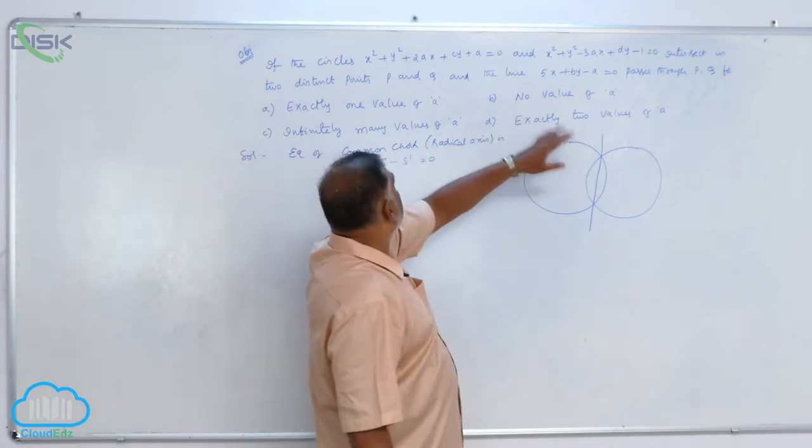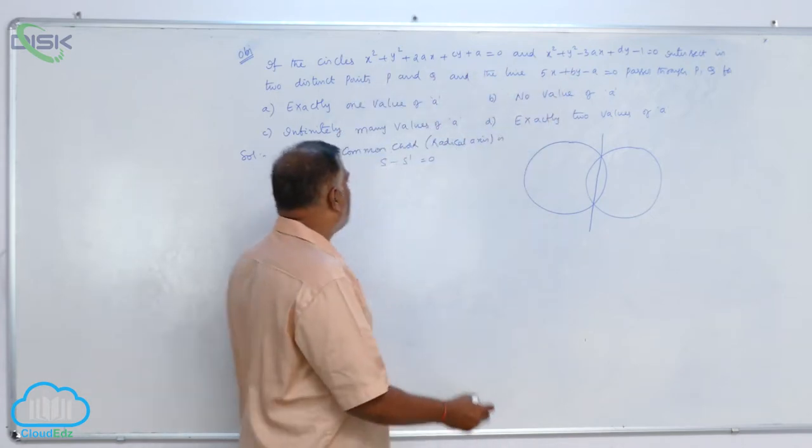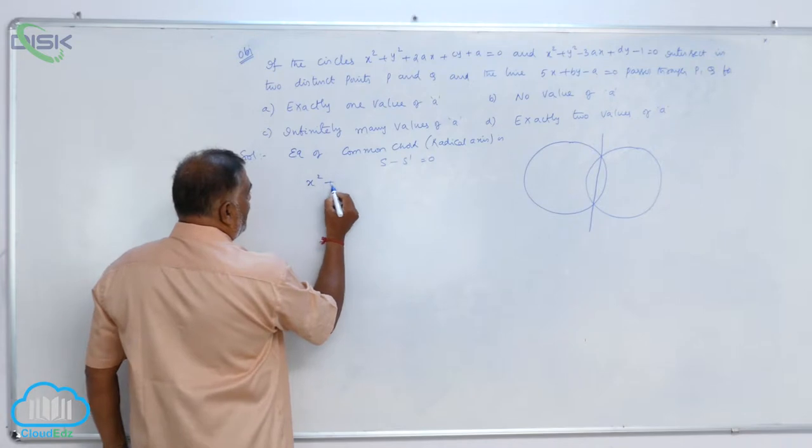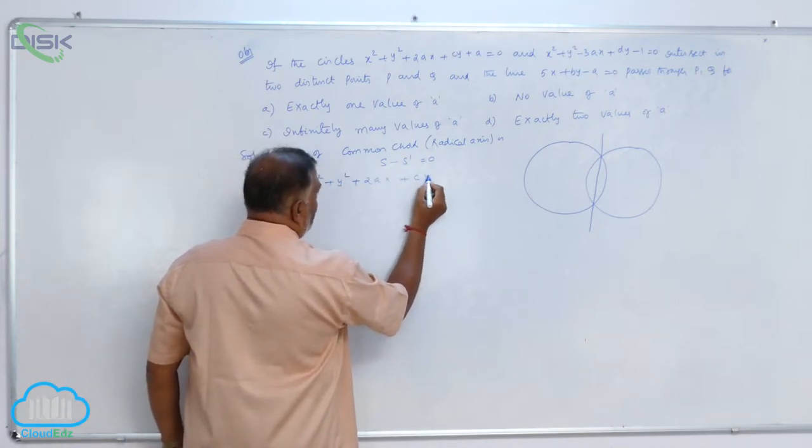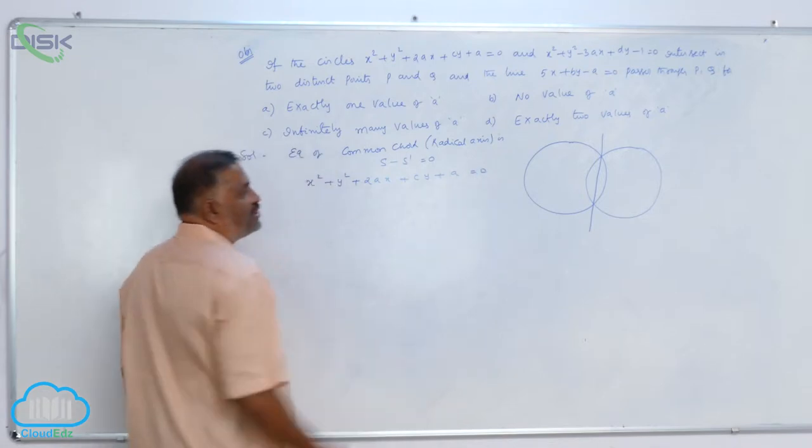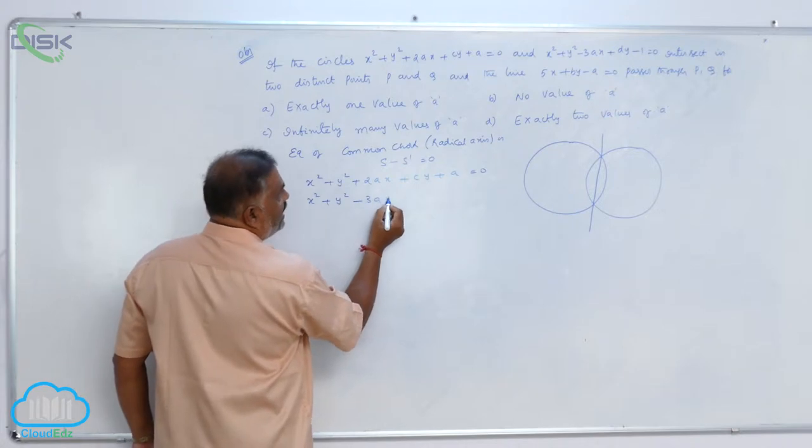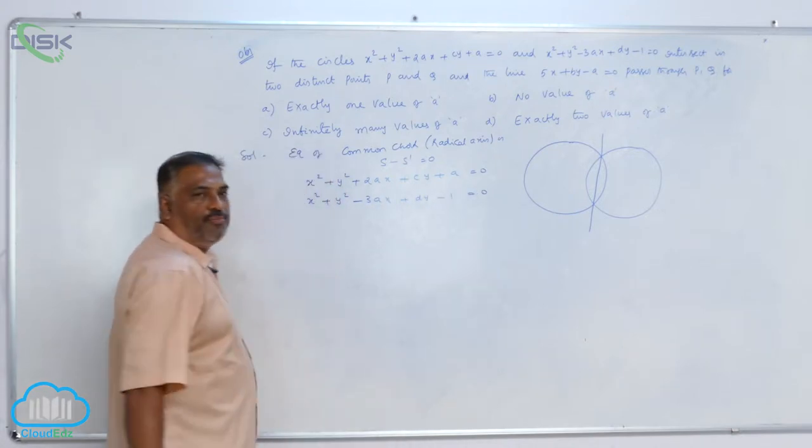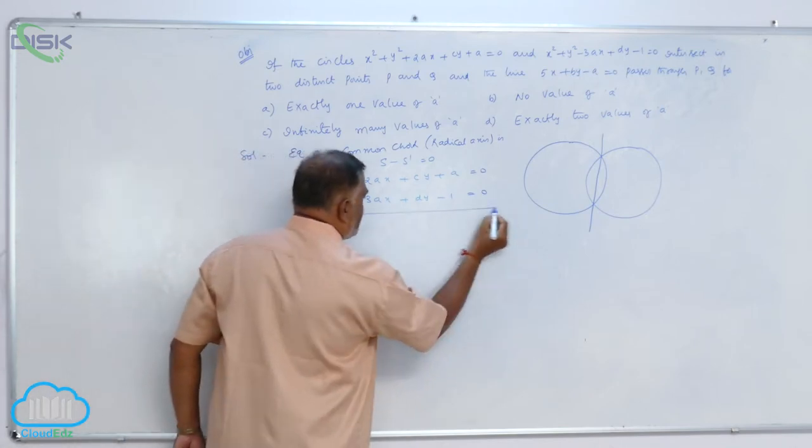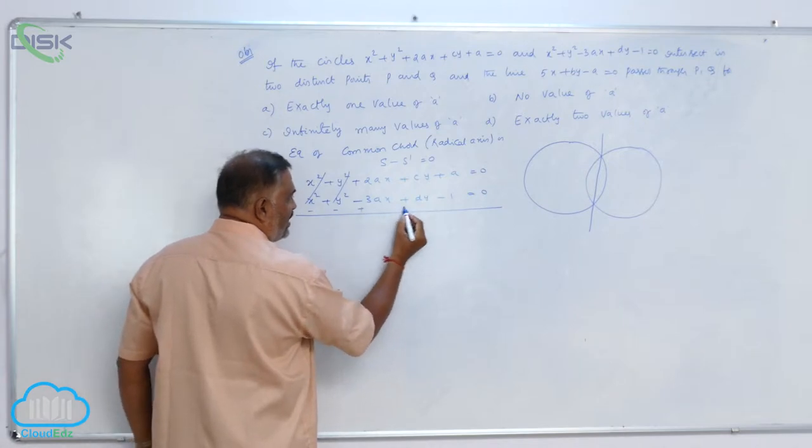That means take the subtraction of the circles; x square, y square gets cancelled. Let us write: x square plus y square plus 2ax plus cy plus a equals zero, and x square plus y square minus 3ax plus dy minus 1 equals zero.